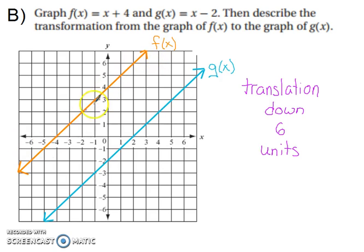So f(x) is the orange one. So that was x + 4. So it started 4 up from our origin. And g(x) is the blue line, and it started 2 down from our origin. So the translation from f(x) to g(x) would be a translation down 6 units.